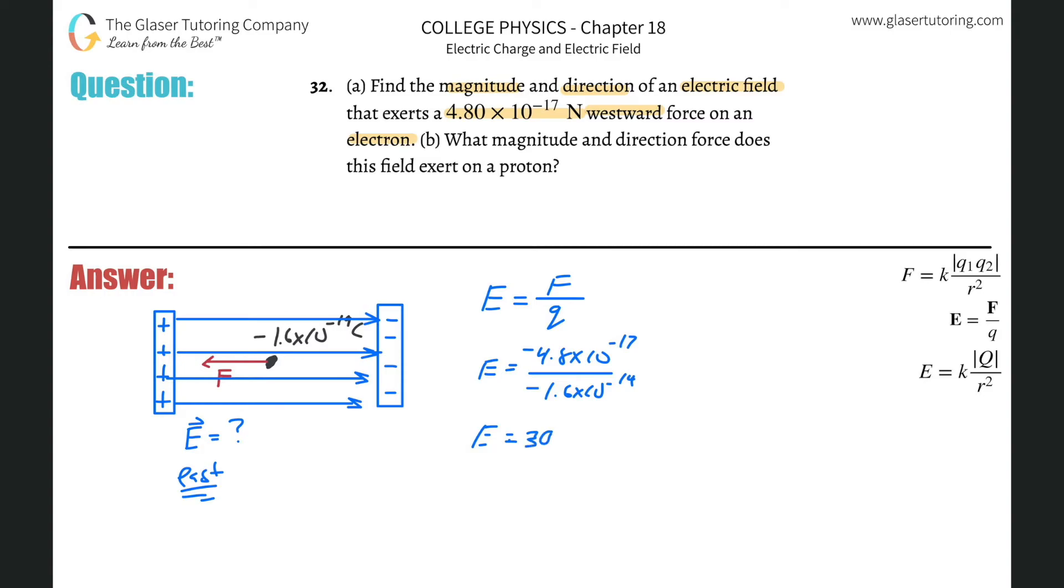And we get about 300, so 300 newtons per coulomb. Those are the units of electric field. So, we got the magnitude and the direction, 300 newtons per coulomb east.